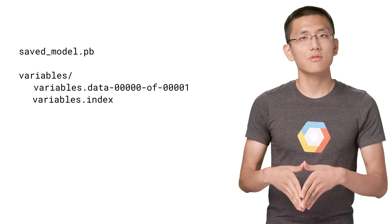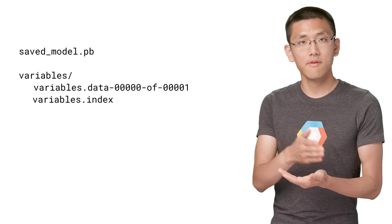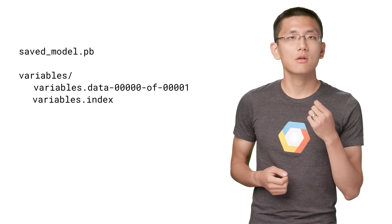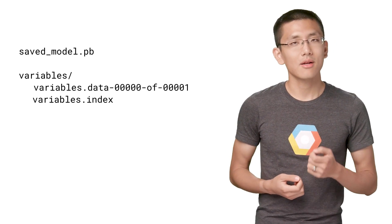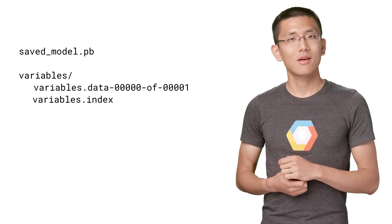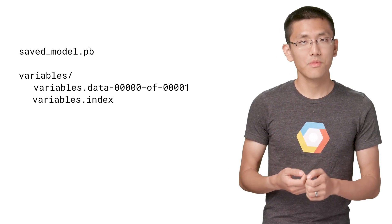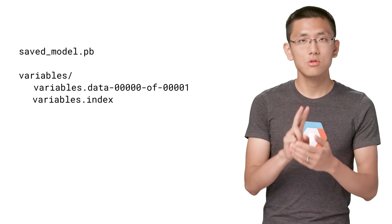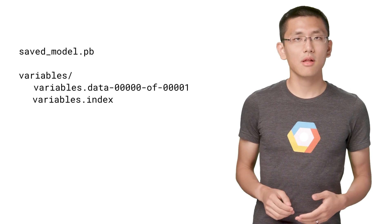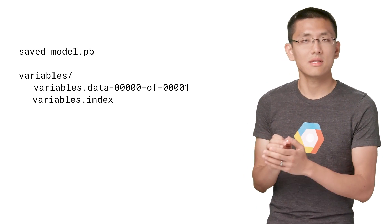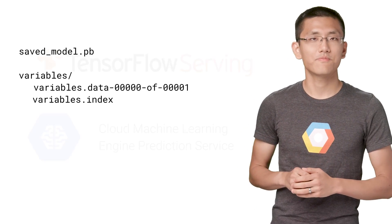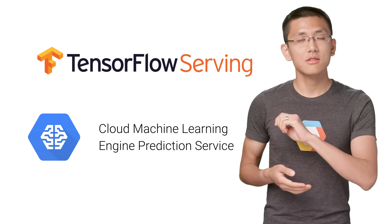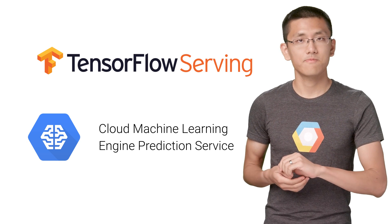These exported files are made up of a file and a folder. The file is called saved-model.pb, which defines the model structure. The variables folder holds two files supplying the trained weights in our model. Once you have an exported model, you're ready to serve it in production.